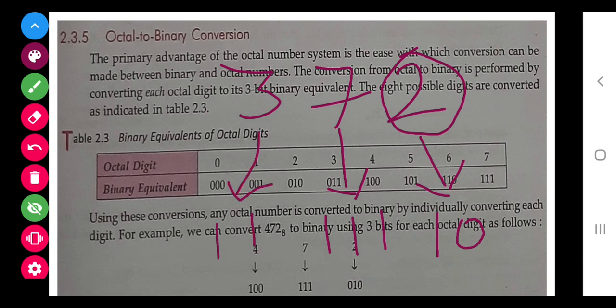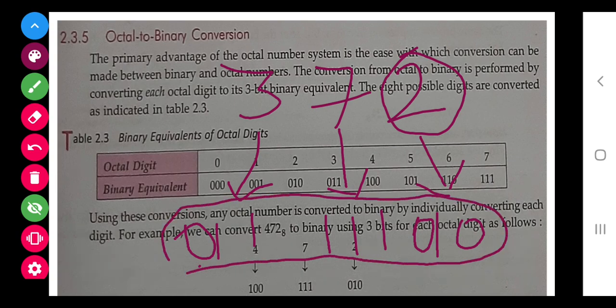And 3 is 11, but what we need to do is convert into 3 bits. Octal in this table says that each digit is of 3 bits, so we will write 0 here and 0 here. So finally, my binary conversion of the octal value is 011111010.